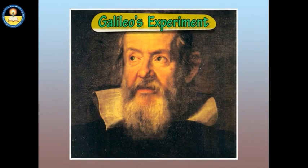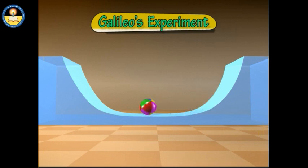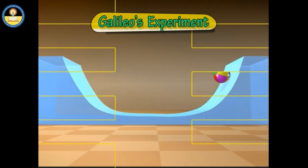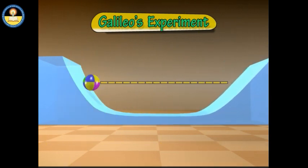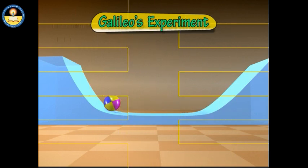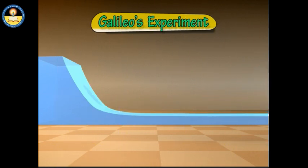Before 1600, the normal state of rest was considered the natural state of matter. Galileo, through his experiments, described a different approach to motion and the natural state of matter. When a ball is released on a smooth surface with two ramps, it attains the same height again. If the second ramp is made steeper, the ball again reaches the same height after travelling a larger distance. If the ramp becomes horizontal, the ball would never stop, as it would never reach the same height, and would continue to move with the same speed.